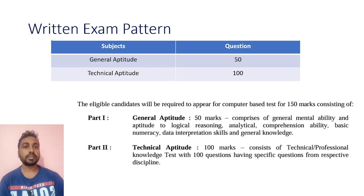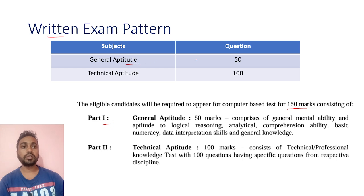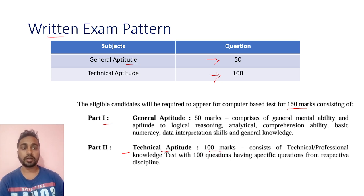First we will see the exam pattern. For this ITI and Technician non-executive exam, BEL is going to take a written test of 150 marks. It consists of two parts: Paper 1 is General Aptitude — 50 questions for 50 marks. Paper 2 is Technical Aptitude — 100 questions for 100 marks, from your branch. In General Aptitude you will get aptitude, reasoning, English, GK, and current affairs questions.